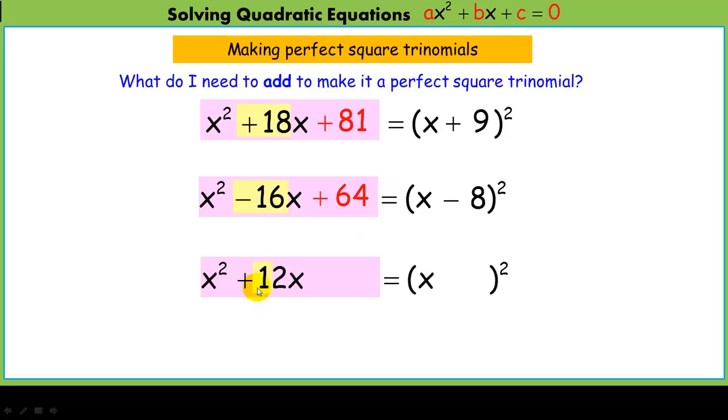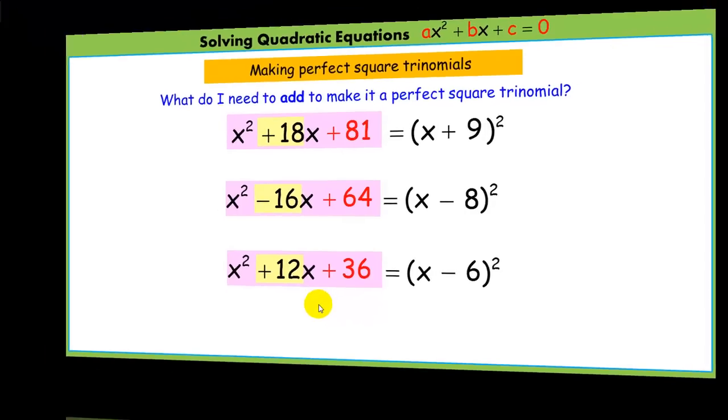Down here, take the 12, cut it in half or divide it by 2, that gives me negative 6, square it 36. Okay, so now we're ready to solve some equations.